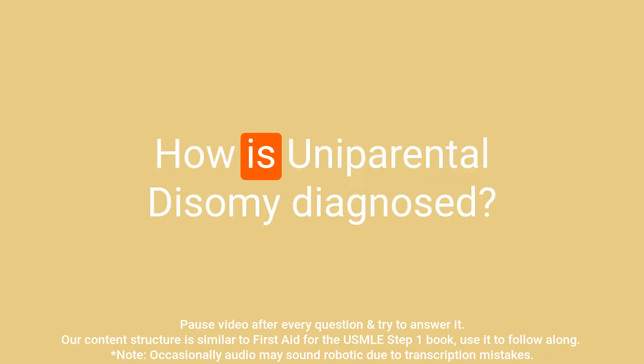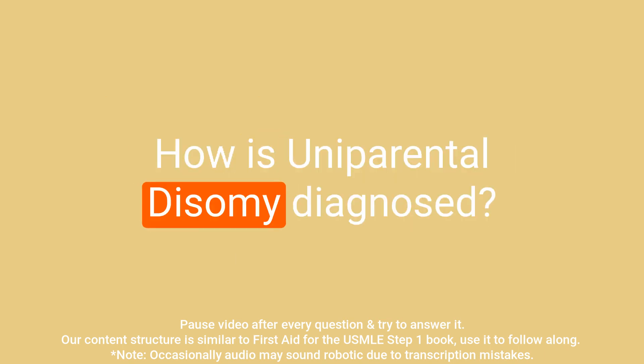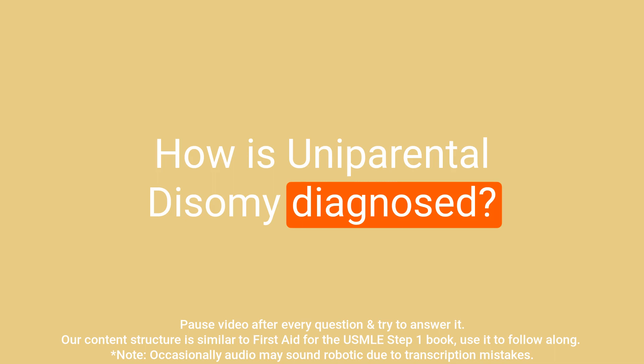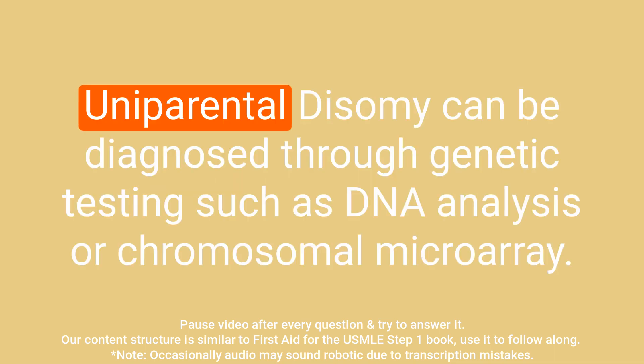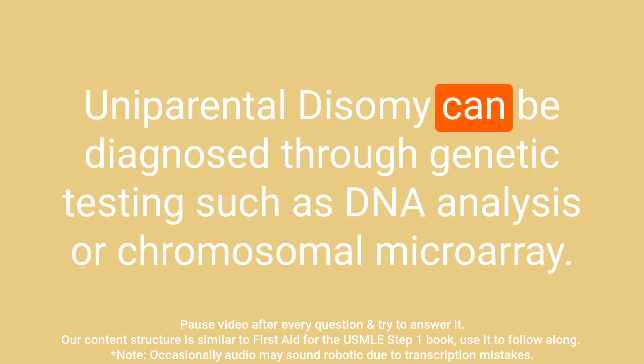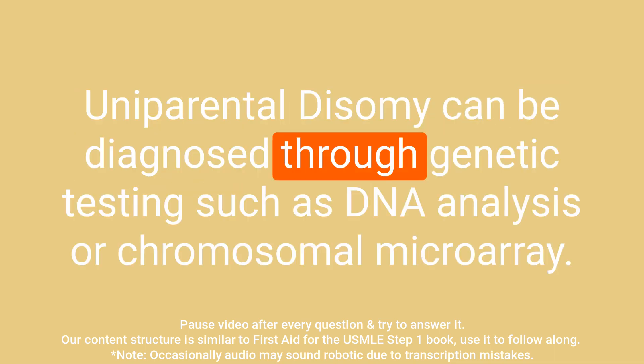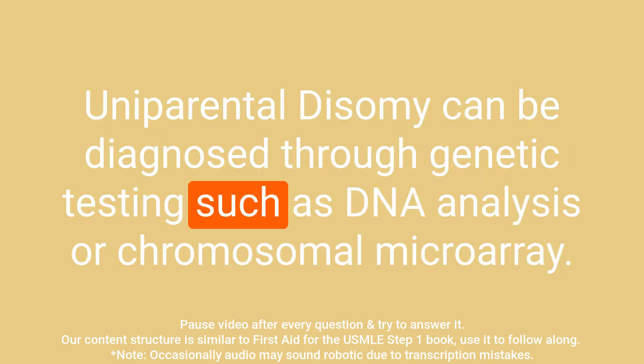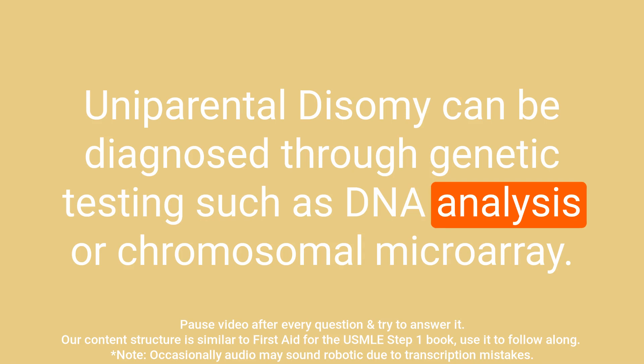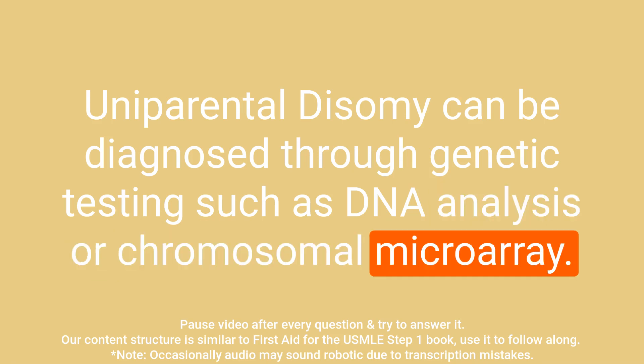Question: How is uniparental disomy diagnosed? Answer: Uniparental disomy can be diagnosed through genetic testing such as DNA analysis or chromosomal microarray.